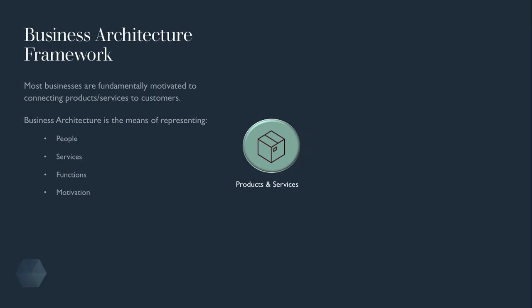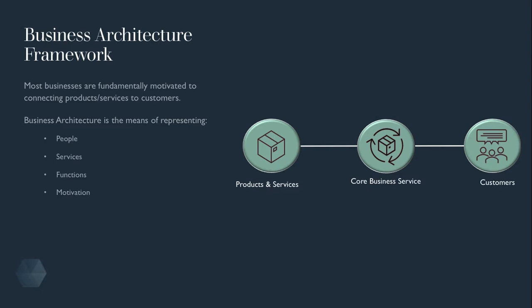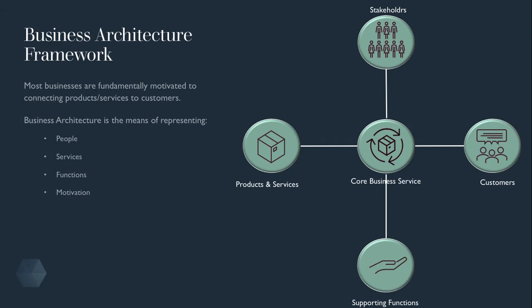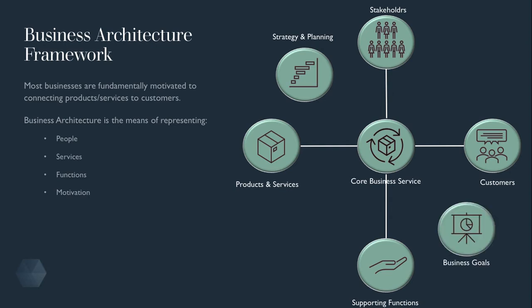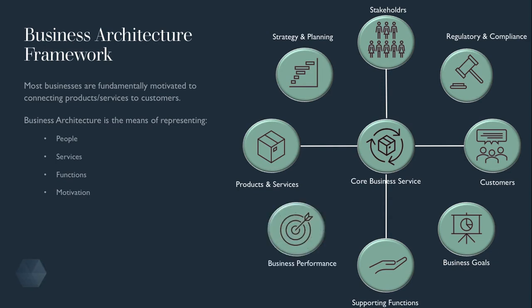The products or services need to connect to customers. They are supported by core business services, and a business is typically supported by a number of stakeholders such as partners or shareholders. The core business services will need supporting functions such as finance, IT, sales and marketing. A business plan and strategy will set the business goals and typically be governed by regulations and compliance measures. The business also needs to track how well it is performing, and all the components are interconnected and need to understand how to access information from each other.